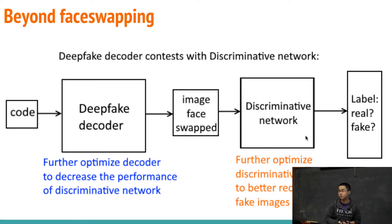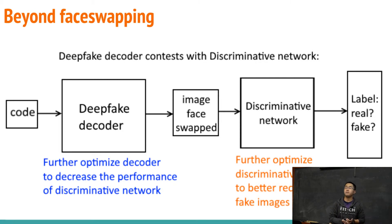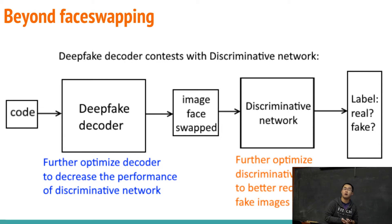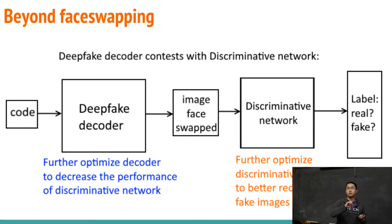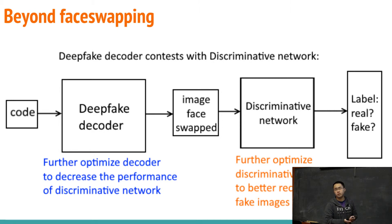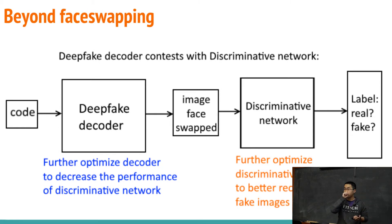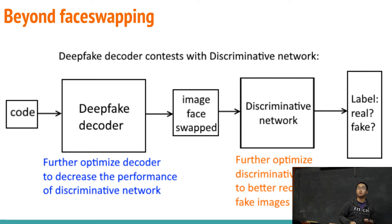However, we found many things that could be improved in the existing version of deepfake face swap. One issue is that the training only trains the autoencoders to learn features on individual facial pictures, but there is no training process that improves the quality of the face swap. As a result, the De Niro decoder and the Hogg decoder are very good at filling details onto their respective skeletal information, but the Hogg decoder is not very good at filling details onto De Niro's skeletal information.